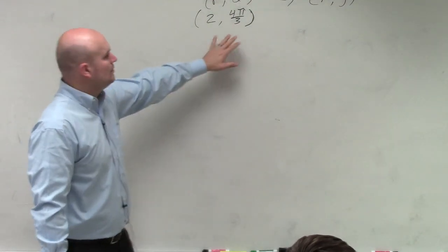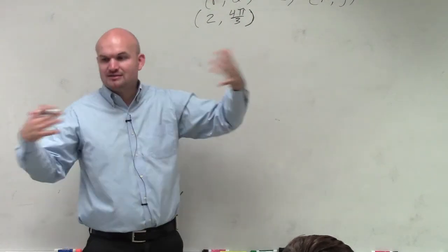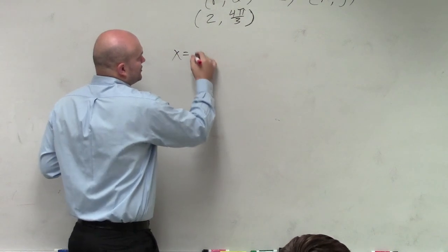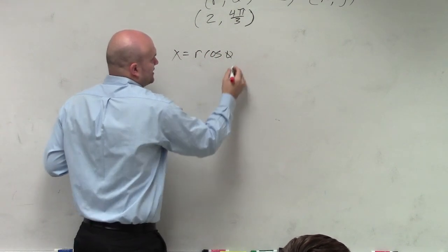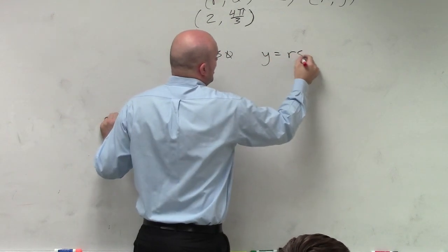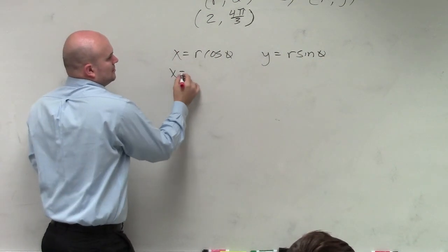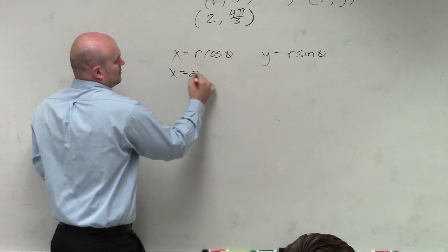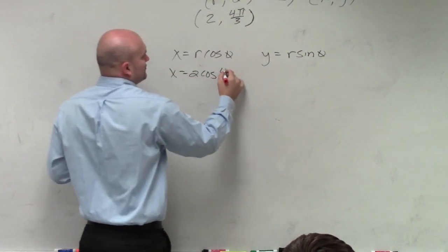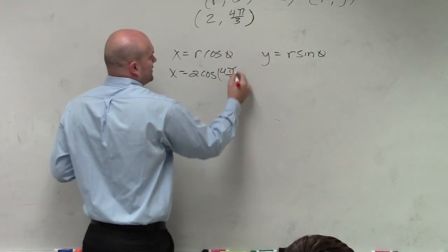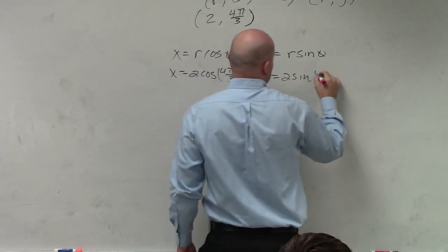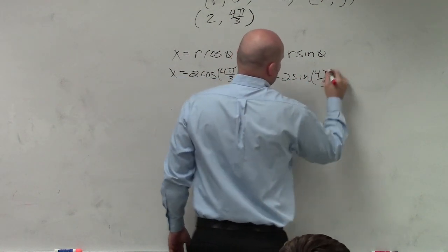So what is this relationship? We've talked about this all last class period. x is equal to r cosine of theta, y is equal to r sine of theta. So r is 2, and then it's cosine times 4π over 3. y equals 2 sine of 4π over 3.